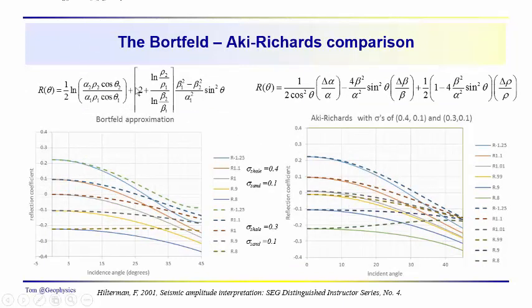Here we're looking at the Bortfeld approximation on the left and the Aki-Richards approximation on the right. The Bortfeld approximation - we can see these zero crossings are a little bit different. Taking these solid and dashed curves for different Poisson's ratio assignments, we get a crossing here at about 27 or so.